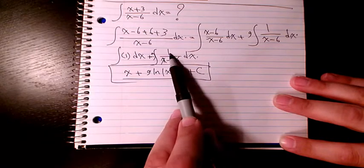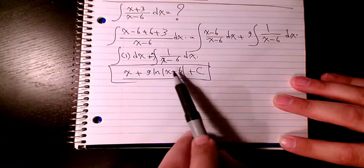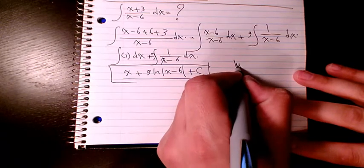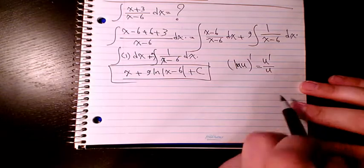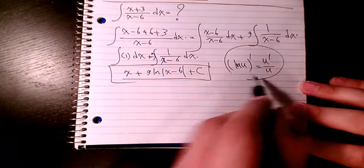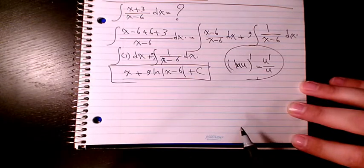x minus 6 is just 1, so it's going to be ln of x minus 6. You know the derivative of ln u is u prime divided by u. That's exactly what we have here - the numerator is the derivative of the denominator.